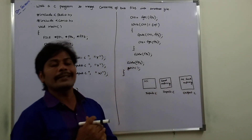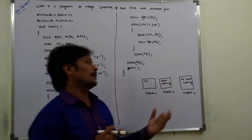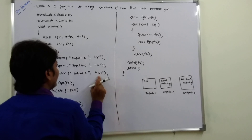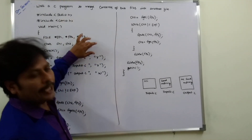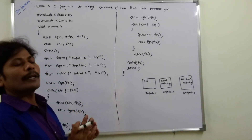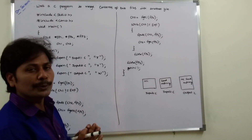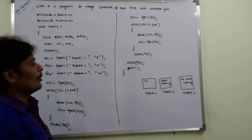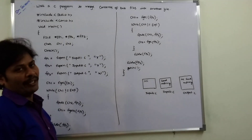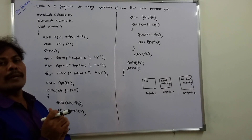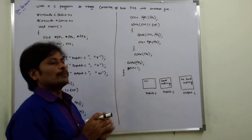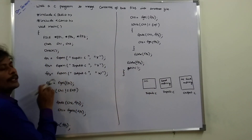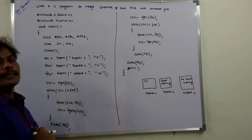The merged information is written into another file, that is output.c. This file is opened in write mode. fp3 = fopen output.c in write mode, because the information from file 1 and file 2 will be transferred and written into the third file output.c. First ch1 = fgetc of fp1 — we want to read the information of the first file. Whatever information is read from the file is assigned to ch1.